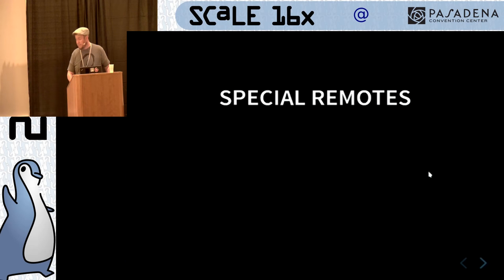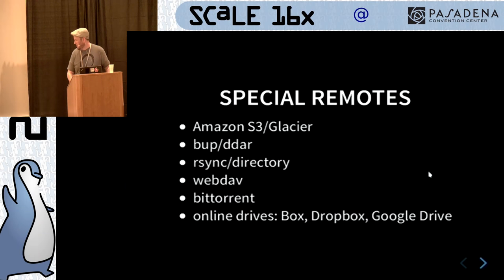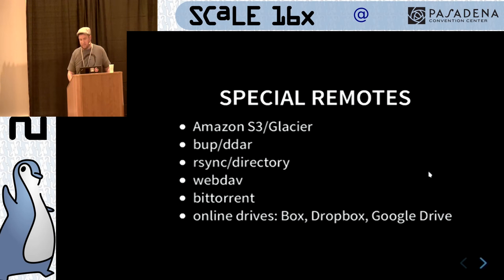Some of the special cloud sauce is in Git Annex special remotes. You can sync to Glacier or S3, BUP or DDAR which are deduplicating archive formats based on the Git pack format, rsync or directory which lets you push only the files without the actual Git repo to a location. So you can push your files to a file server and push only the Git without the annex part to a centralized server and bring them back together. Also webdav, bittorrent, and then all of your online drives — Box, Dropbox, Google Drive. The list is really super long for the add-ons. They are all at the Git Annex home page with instructions. It's basically just an extra flag on the remote, you give it user credentials, and you can stick all your files there.